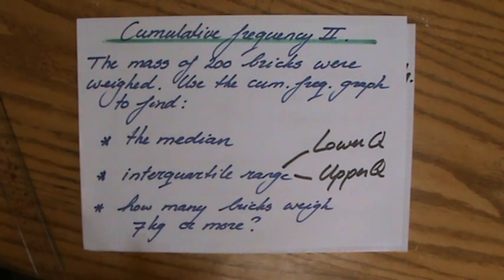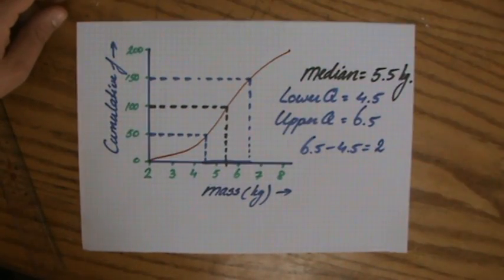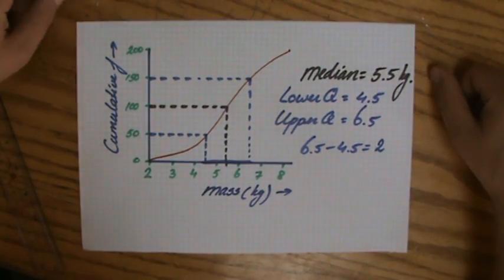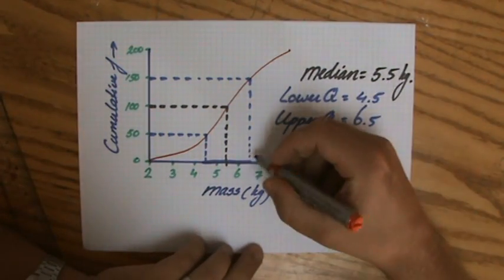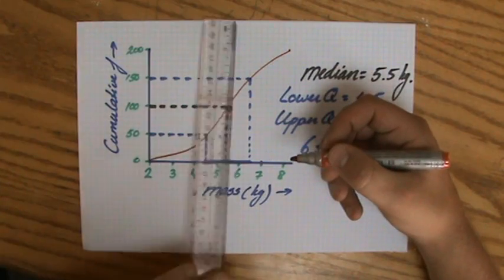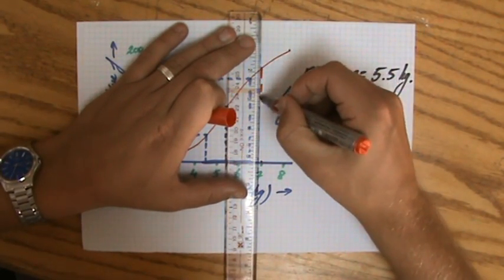How many bricks weigh 7 kilos or more? Interesting. How many bricks weigh 7 kilos or more? Now where is 7 kilos? I'm going to do that with some red. 7 kilos is here. So let me have a look. Let's go to the graph.